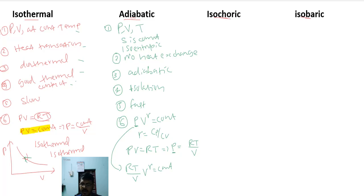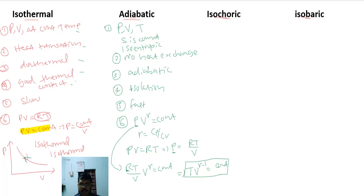Substituting P = RT/V into PV^gamma = constant and simplifying, since R is a constant, we get TV^(gamma−1) = constant. This is another form of the equation of state for an adiabatic process.